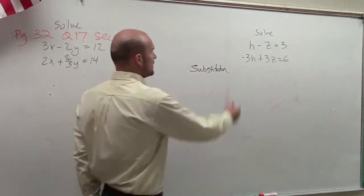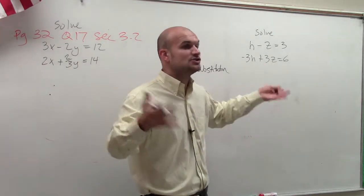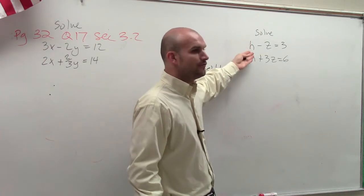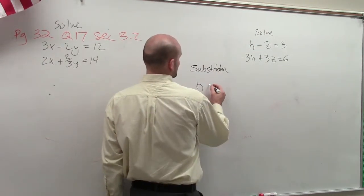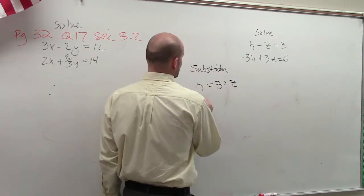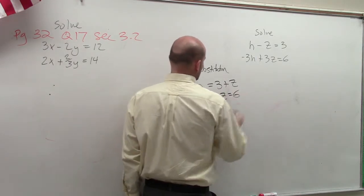So on substitution, first thing we've got to do is solve for one of our variables, right? We've got to choose which variable to solve for. Well, obviously, you can see that the easiest variable to solve for would be h, right? So you could say h equals 3 plus z. And then you have negative 3h plus 3z equals 6.